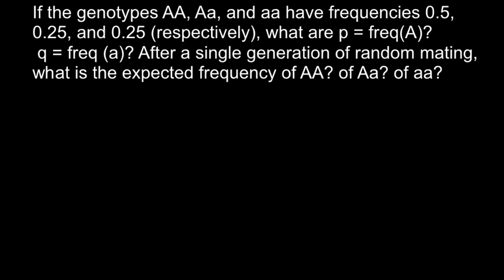I want to start by listing all the genotypes and their frequencies, so it would be more convenient for us to work. We have three genotypes. The first genotype is homozygous dominant and its frequency is 0.5. We also have the heterozygous genotype with a frequency of 0.25, and the homozygous recessive genotype with a frequency of 0.25.